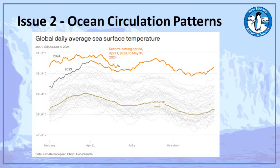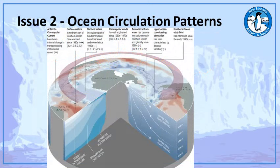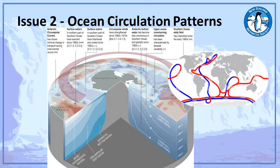Looking at sea surface temperatures: you can see the orange line at the top showing 14 months of record sea surface temperatures. The olive-brown line in the middle is the mean from 1982 to 2011. There is a huge difference between that mean and what we're recording now — probably about a degree of temperature rise. When you factor all those things into the complex picture of ocean currents around Antarctica, you can see quite a lot of potential change in the world's oceans.